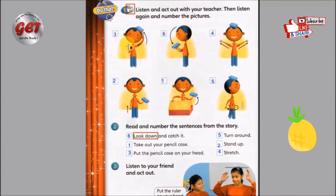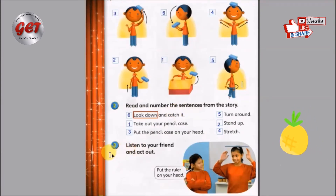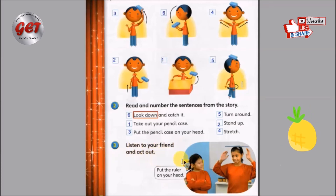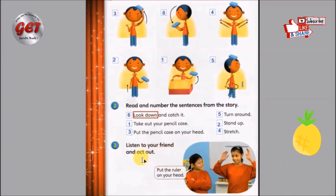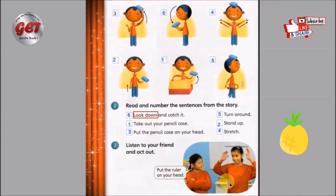好，小朋友们，所以你们也要把这个号码给标示出来，好吧，写下来，写下这些号码。Part 3. 第三个部分 — Listen to your friend and act. 第三个部分呢，你必须要仔细听你的朋友，然后呢，再把动作做出来。你跟朋友们呢可以轮流下命令，然后另外一个就要跟着这个命令做，好不好？